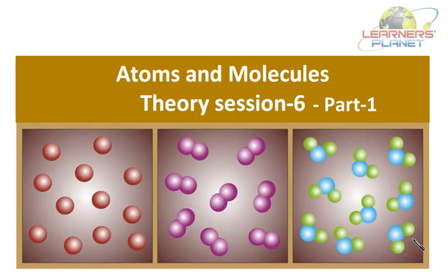Hello students, welcome to this session of atoms and molecules. In this session we are going to discuss about ions, how these ions are formed. There are two types of ions: the cations and the anions. The positively charged ions are called cations whereas the negatively charged ions are called anions. We will be discussing about their formation and also about the formation of ionic compounds. So let's start our theory session here.